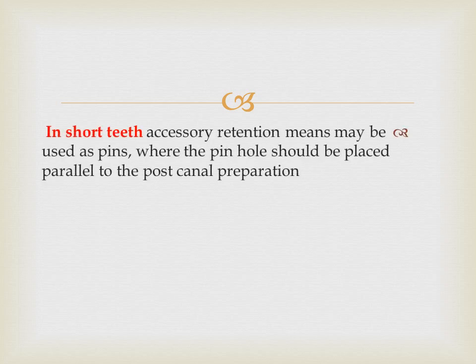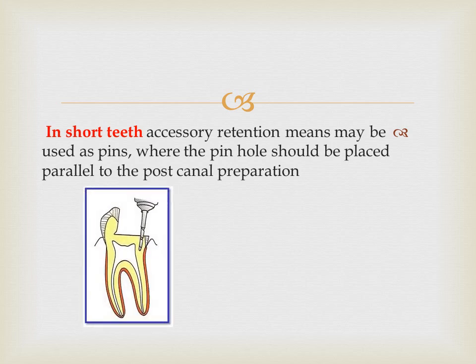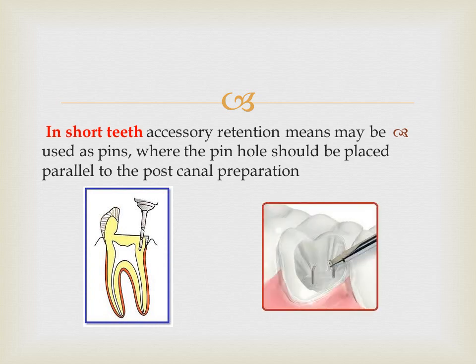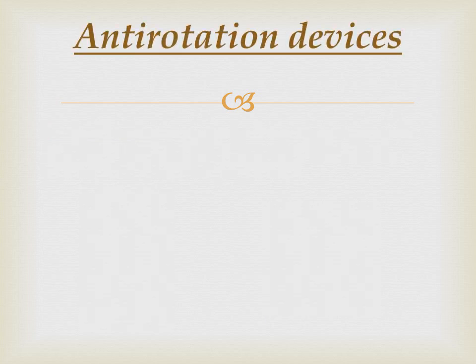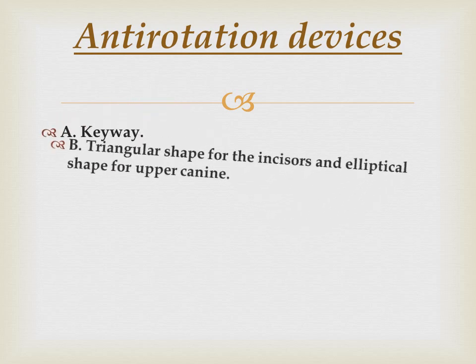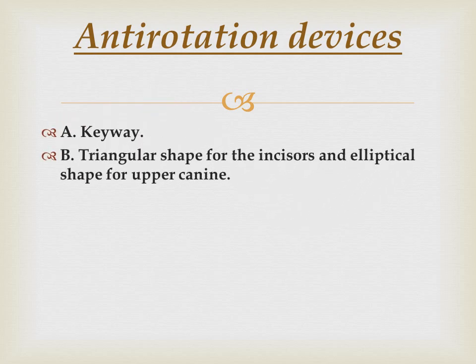In short teeth, accessory retention means such as pins may be used; the pin hole should be placed parallel to the post canal preparation. The anti-rotation devices of the post crown include a key-way with triangular shape for incisors, an elliptical shape for upper canines, and pins.